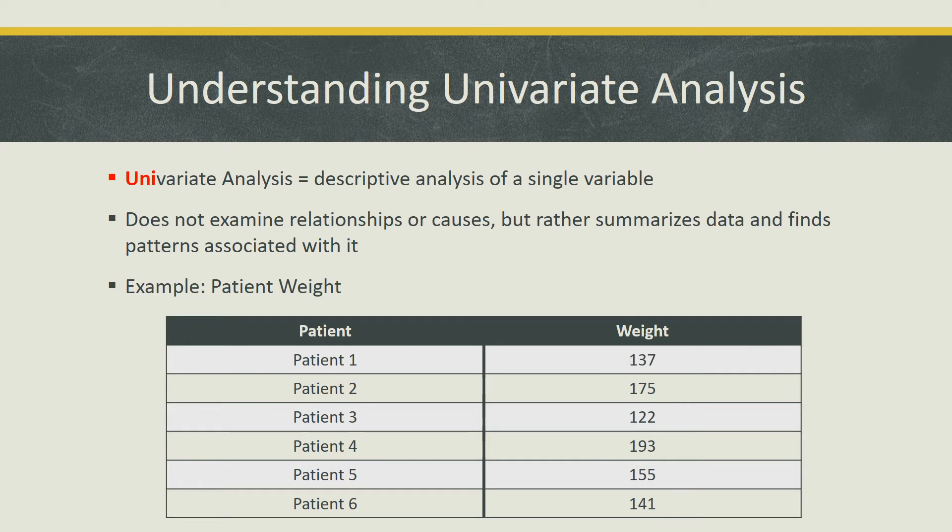Let me give you some background information. Univariate analysis is the simplest form of statistical analysis. The prefix uni, as shown in red, is used to show that there is only one variable involved. It is essentially the descriptive analysis of a single variable used to describe characteristics of a sample.